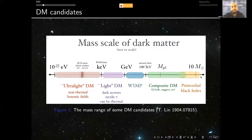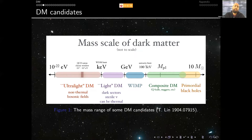You can have very light bosons with ridiculously small masses, up to several times solar masses. Of course the possibilities are huge. In our case we are going to focus on the blue region, specifically a portion of it in which there is a paradigm — one of the most popular — called the WIMP paradigm. Our scenario is going to be basically in this region, so we are going to focus on those mass scales.